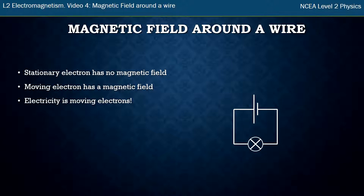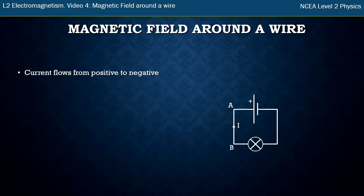So here I have a circuit and I need to make sure I label the positive side of the battery so I know which way the current goes. Current comes from the positive side of the battery around, and I'm just going to look at the section of wire called AB. Current flows from positive to negative — we know that — and the name we call this is conventional current.